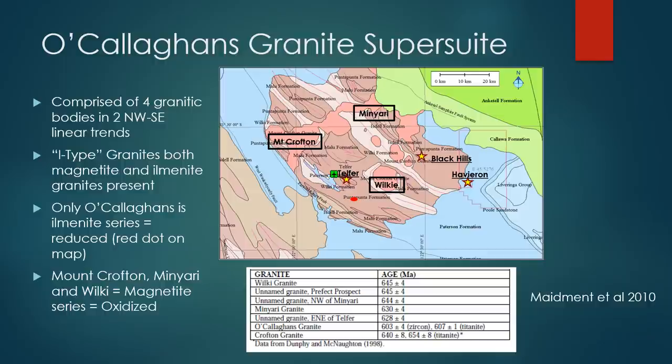In the individual granites we either have the presence of magnetite or ilmenite. These two minerals will tell us whether the granite was oxidised or reduced. Most of the granites contain magnetite and are therefore oxidised. Only the O'Callaghan's Granite has ilmenite and is reduced — that's the youngest granite, highlighted by the red dot over here.